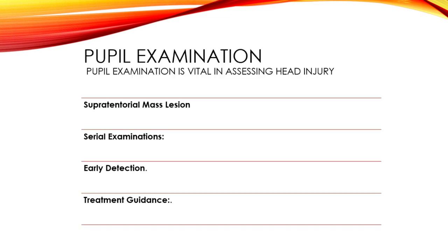In cases of a supratentorial brain injury, the pupil on that side may dilate. This is known as ipsilateral dilation. Serial pupil examinations over time are crucial. Changes in size, reactivity, or anisocoria can indicate neurological deterioration. Pupil abnormalities can be among the first signs of neurological deterioration, and recognizing these changes promptly is essential for patient management.